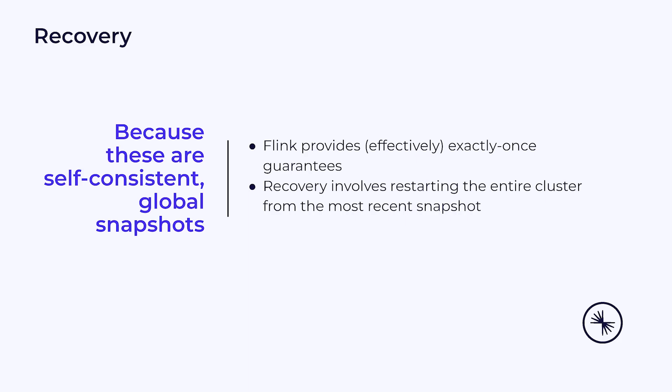There are two important takeaways concerning recovery. Both stem from the fact that Flink's state snapshots are self-consistent — they include every piece of state that resulted from fully processing the input streams up to the source offsets recorded in the snapshot, and nothing beyond those offsets. The first takeaway is that Flink is able to provide what is effectively an exactly-once guarantee. This does not mean that every event is processed exactly once, but rather that every event affects the state Flink is managing exactly once — it's exactly the same as if the failure had never occurred. The second takeaway is that recovery requires rolling back the entire cluster to the state recorded in the most recent snapshot. The whole cluster does a restart, not just the node that failed.